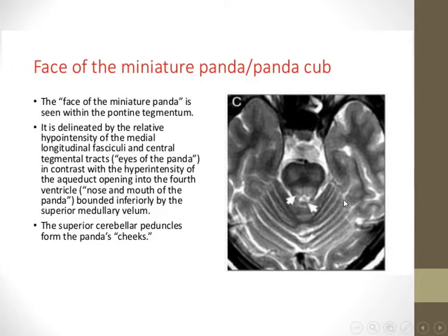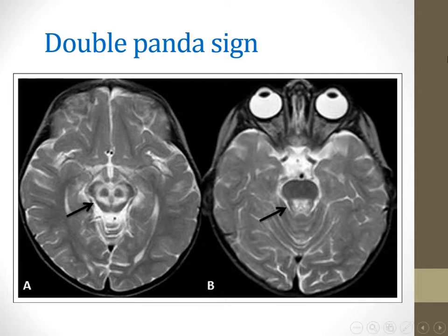The hypointense medial longitudinal fasciculi and tegmental tract form the eyes of the cub panda, in contrast with the hyperintense aqueduct opening into the fourth ventricle, forming the nose and mouth. The superior cerebellar peduncle forms the panda's cheek, bounded inferiorly by the superior medullary velum. If both the giant panda and the miniature panda signs are present together, this is called the double panda sign.